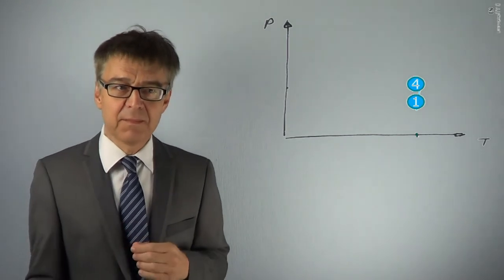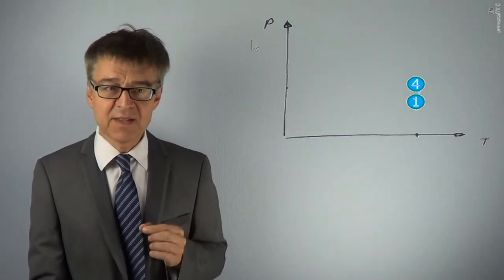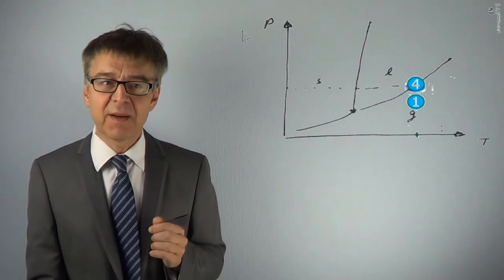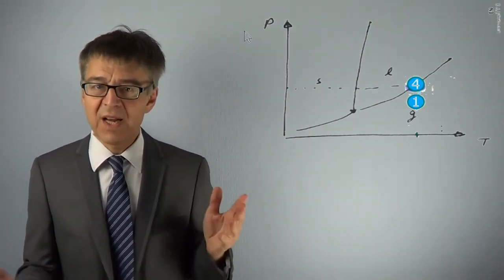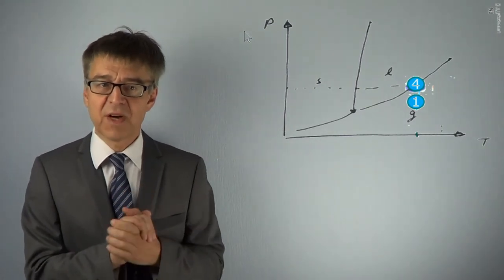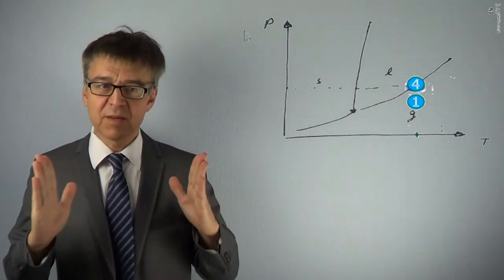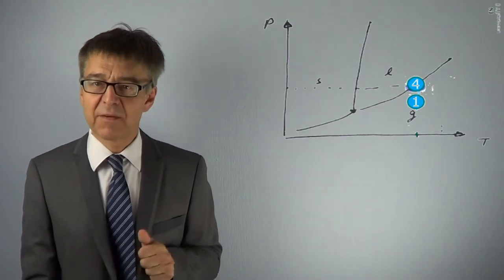When projecting into the PT diagram, the two-phase regions are reduced to lines. And the triple line becomes a triple point. Tie lines are no longer to be found here. All tie lines are reduced to points in the PT diagram.